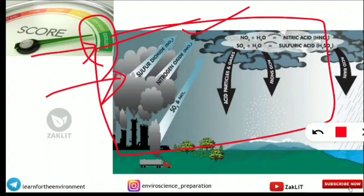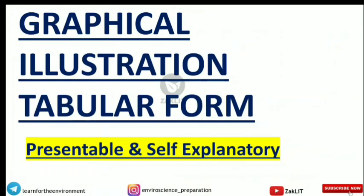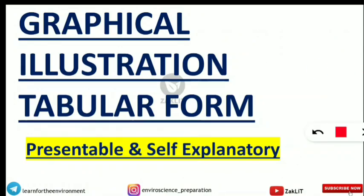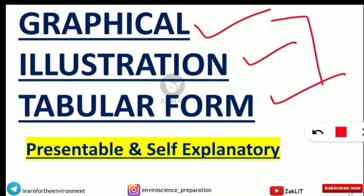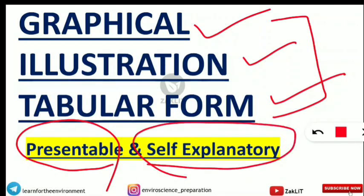Now let's know the important characteristics to write a good number of answers. The things you should use in paragraphs or essay type portions are: graphical representation, illustration, and tabular form. These three things are the brahmastra — they will give you a very good, presentable, and self-explanatory answer. If you include these, they will be self-explanatory to the examiner, the examiner will be very happy, and you will get more marks very surely.